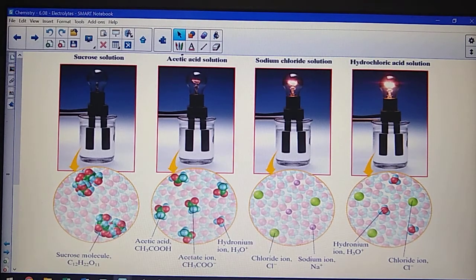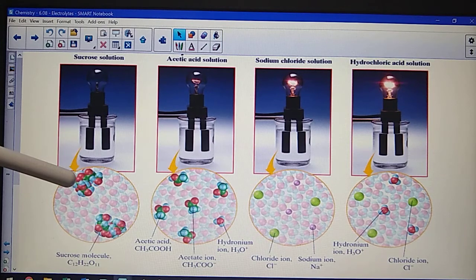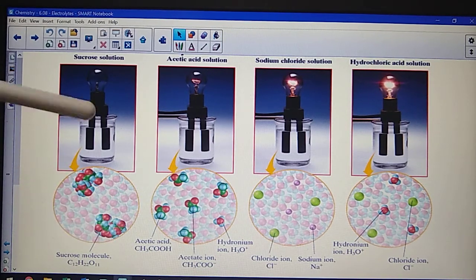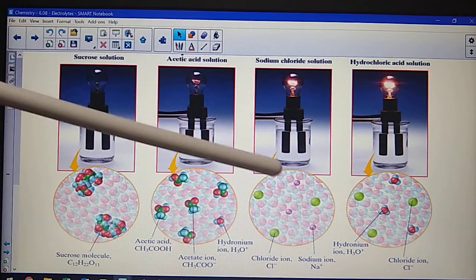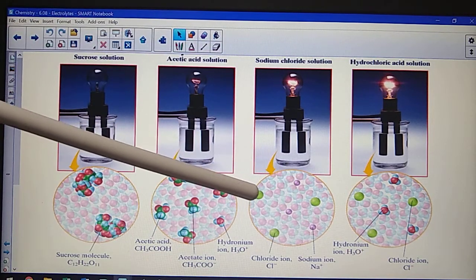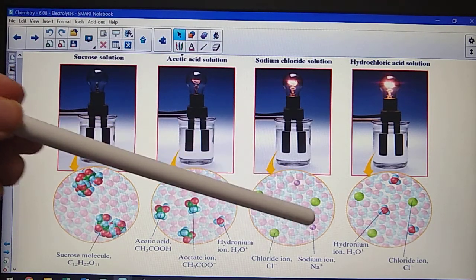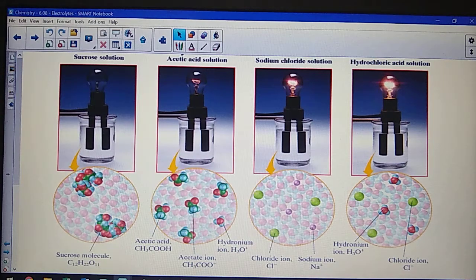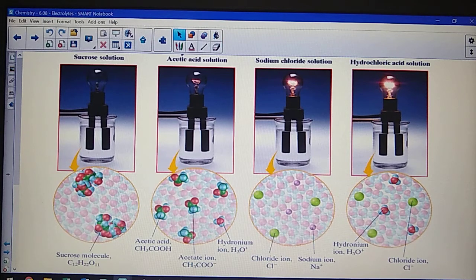When I have my sucrose solution, it is covalent, and it simply gets pulled apart from its neighbors. Whereas for sodium chloride, the individual cations and anions are separated, which means they have a charge. This also tells us that if acids conduct electricity, they must also be breaking up into ions. More will be discussed about acids and bases at a later unit.